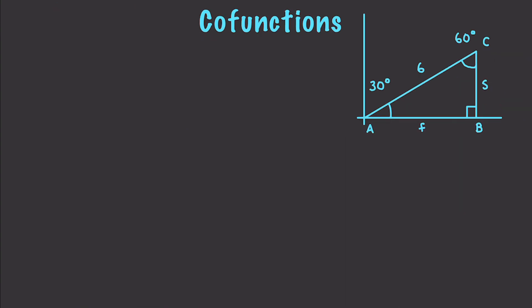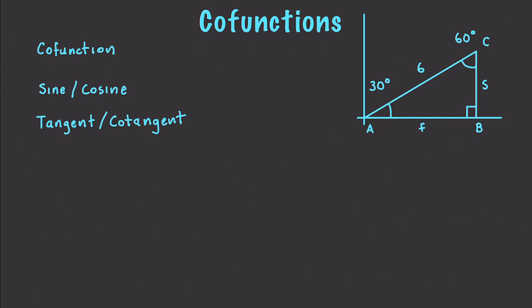We're going to focus specifically on co-functions, reciprocal functions, and negative identities. What exactly is a co-function? It is the complement of another function. So sine and cosine are co-functions, as are tangent and cotangent, and secant and cosecant.